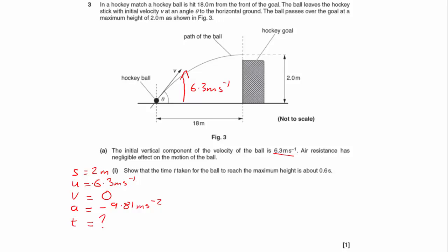The acceleration due to gravity is going to be minus 9.81 metres per second squared, and we are after the time. Now, because we've got all of these variables, and we're just after one of them, we can choose any of the equations as long as it's got time in it.